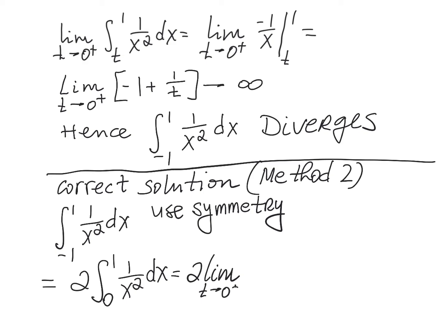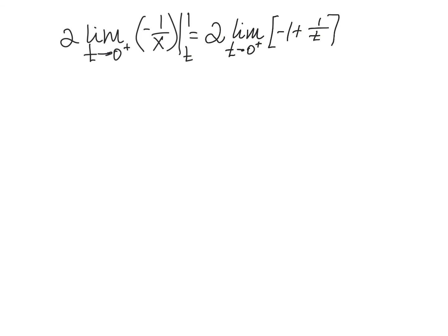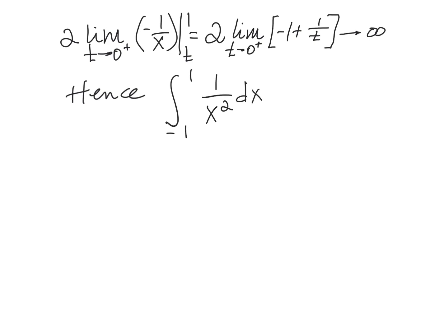This integral is converted to a limit: 2 times the limit as t approaches 0 from the right of the integral from t to 1 of 1 over x squared dx. This equals 2 times the limit as t approaches 0 from the right of negative 1 over x evaluated from t to 1, which equals 2 times the limit as t approaches 0 from the right of negative 1 plus 1 over t. Again that is headed toward infinity; multiplying by 2 does not change that. So once again we conclude that the improper integral from minus 1 to 1 of 1 over x squared diverges.